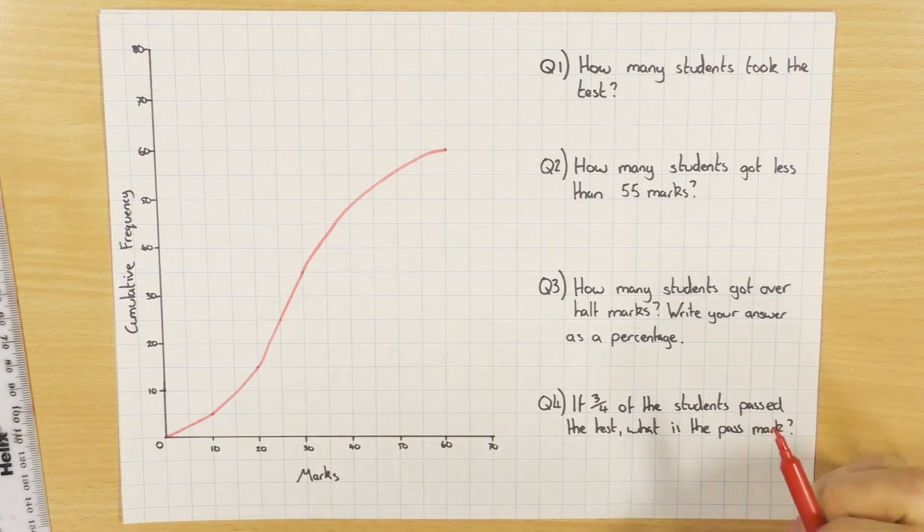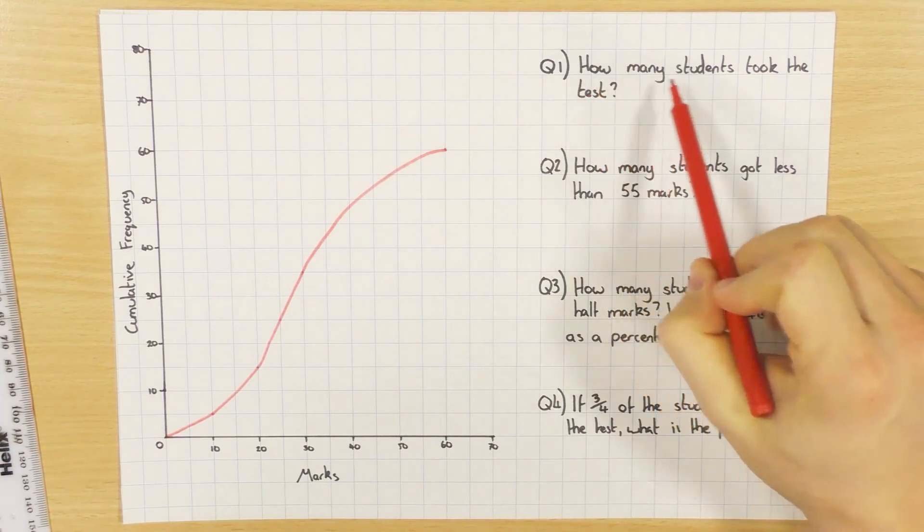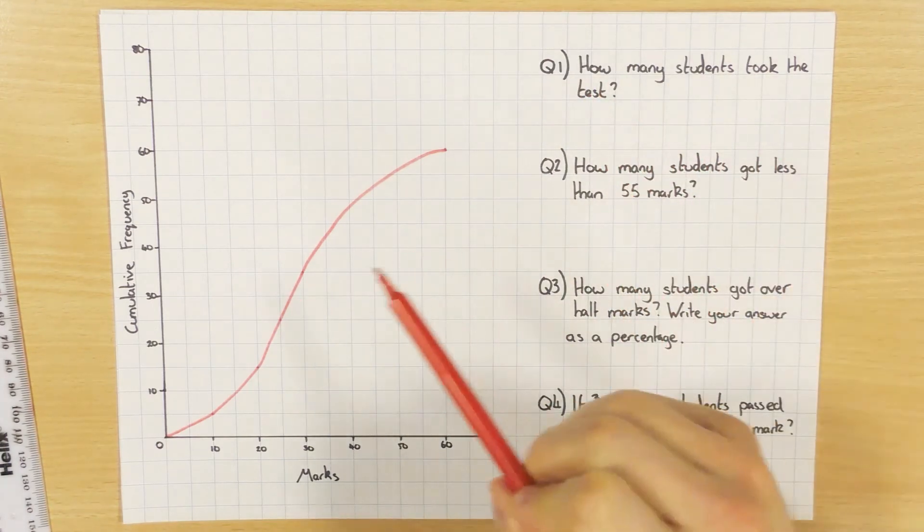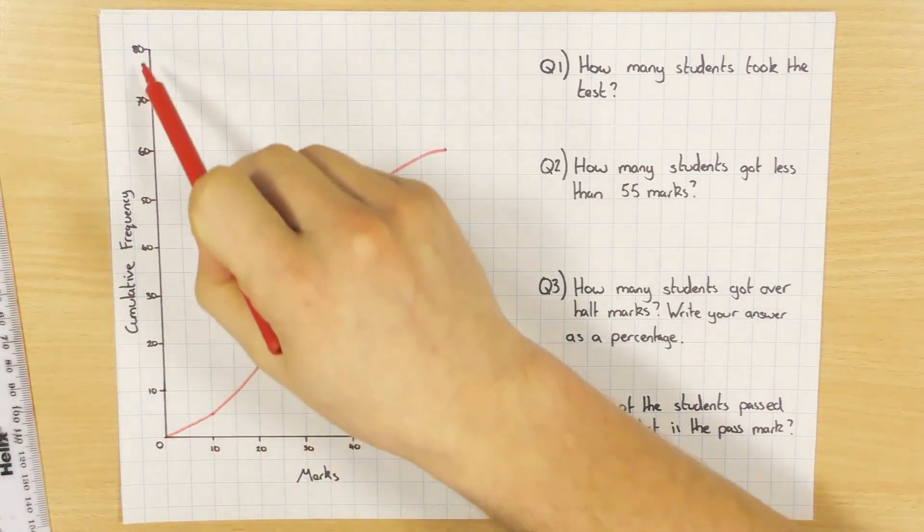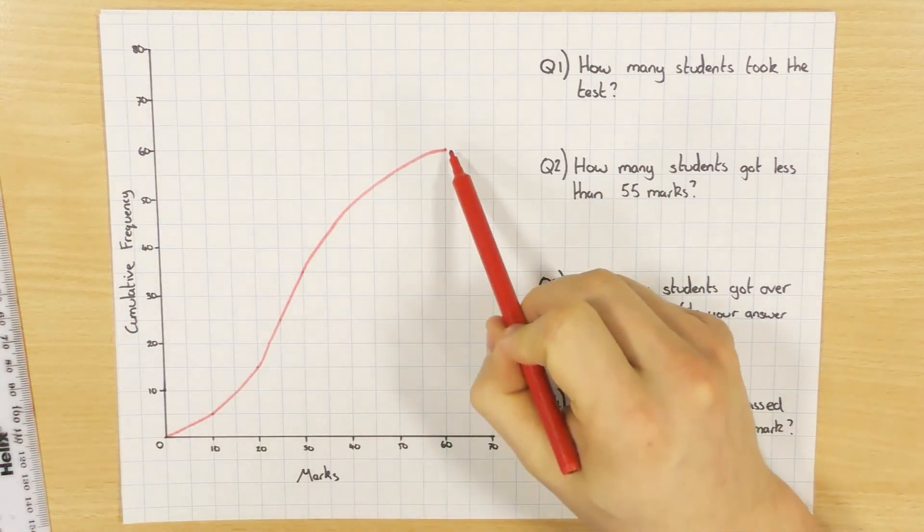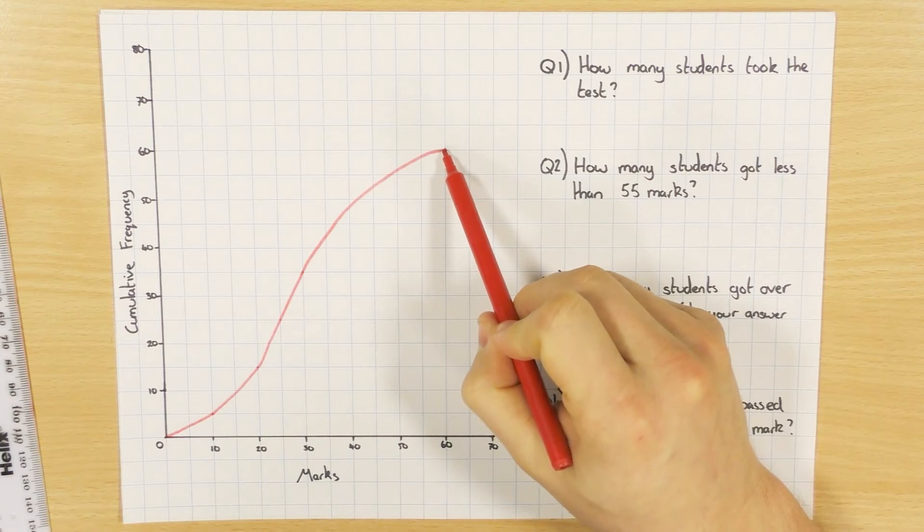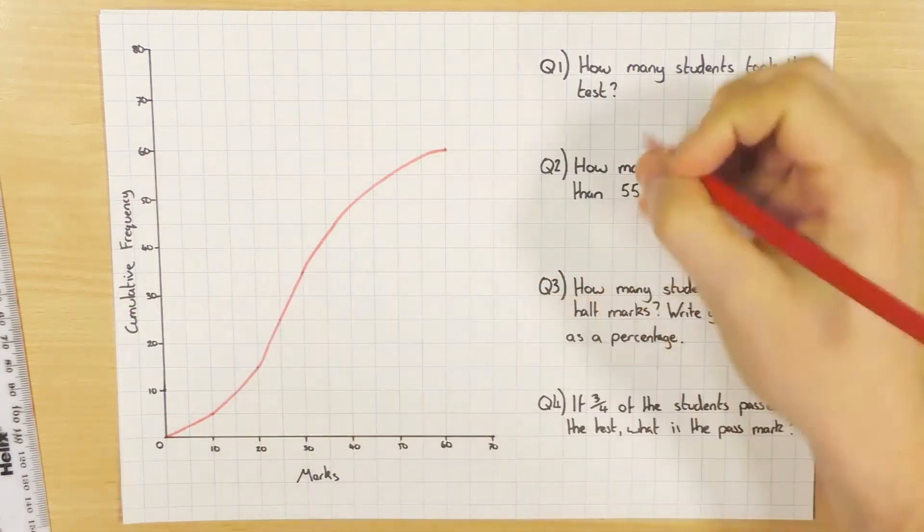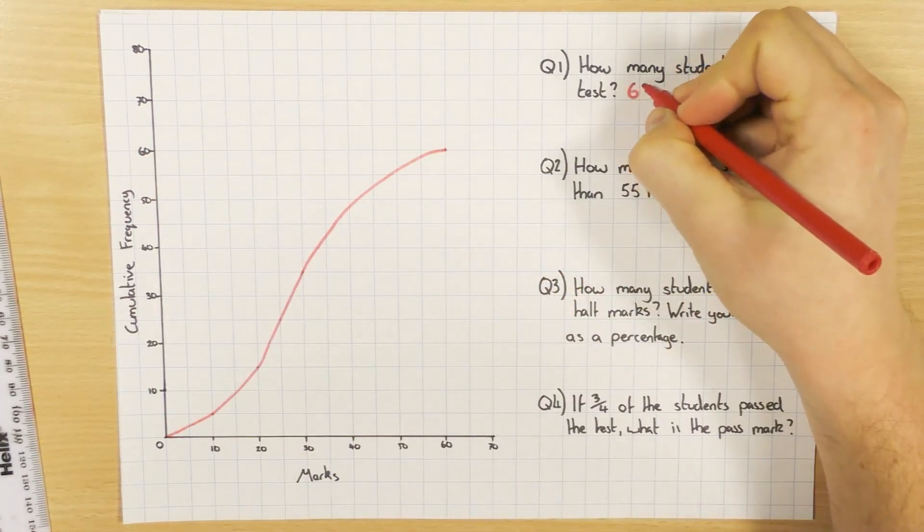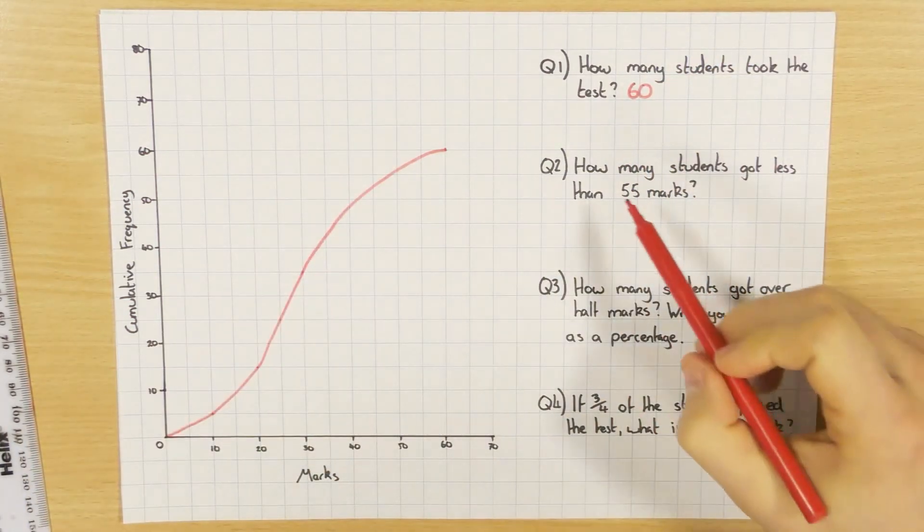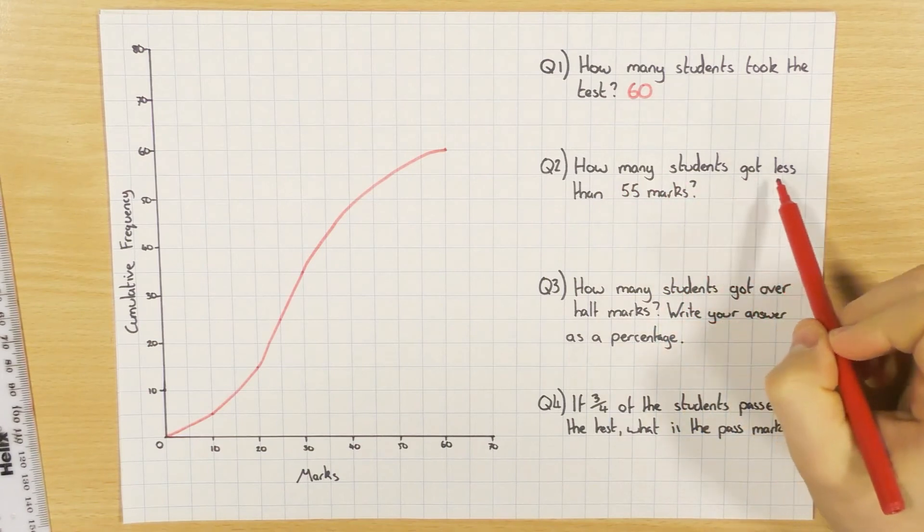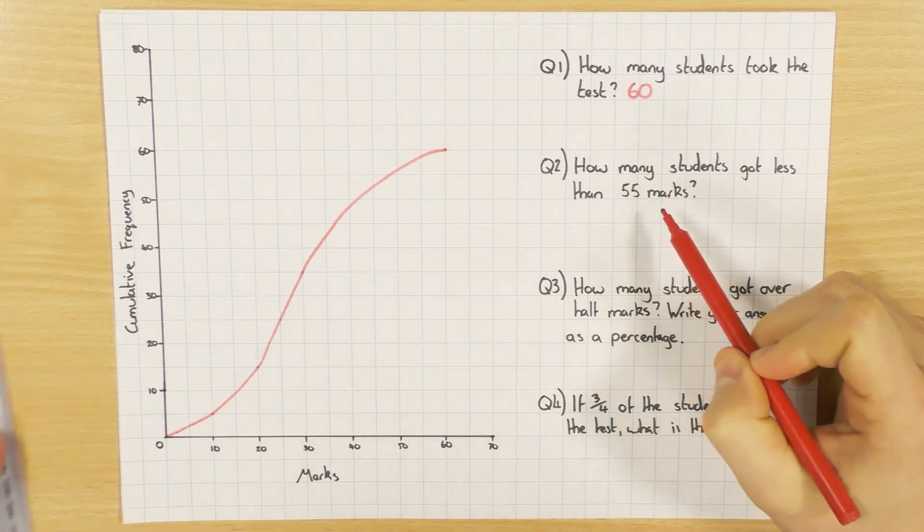So this one here is students who have just done a test. So the first question it says is, how many students took the test? So again, it's not how high the y-axis or cumulative frequency goes to. It's where the graph ends. So here's where it ends, so I go across here, and it's 60. So 60 students took the test, so just be aware of that one.